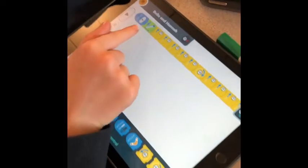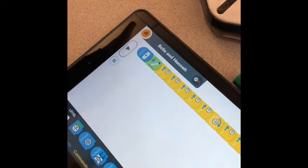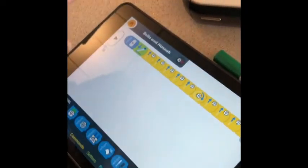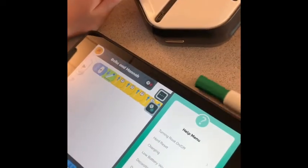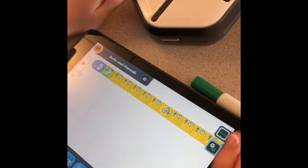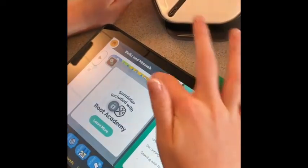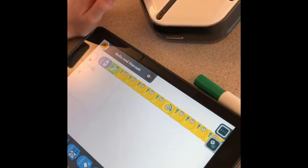And one tip, make sure you use that green button or it won't color. It will not color. And there's also the Help menu and you can tap blocks to see what they mean.